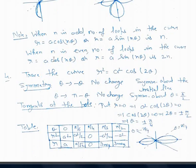In general, remember this result: for the curves R = A·cos(n·theta) or R = A·sin(n·theta), when n is odd the number of loops is n, and when n is even the number of loops is 2n.